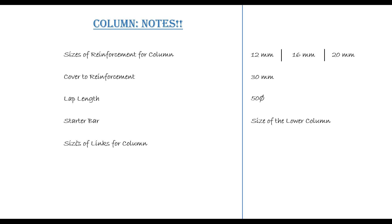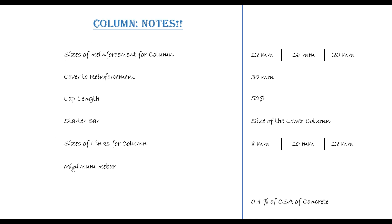The size of the links is important and most of the time they are given by the code — you can have 8mm, 10mm, or 12mm depending on the design. We also have the minimum area of reinforcement for columns, which is 0.4% of the cross-sectional area of the concrete. Whatever the cross-sectional area of the concrete is, 0.4% of it is the minimum area of reinforcement you have to provide.